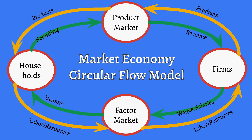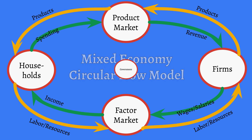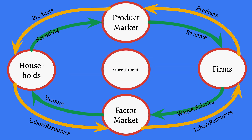The one big thing missing from the market economy model, which is present in a mixed economy, is going to be the government. So government is not in the market economy, but it is in the mixed economy. The first thing the government does, as most people know, is tax us. Some of the money that households have doesn't go to the product market — some of it the government forces them to give, and we call that taxes.